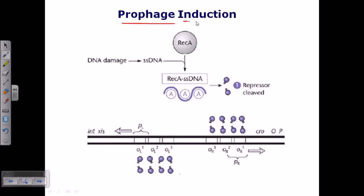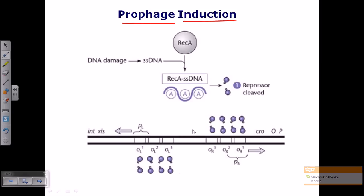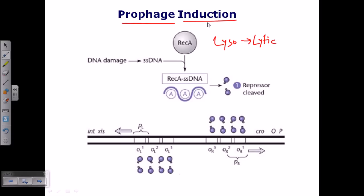Now let's talk about prophage induction — the release of the lysogen from the lysogenic condition. The phage genome is incorporated somewhere in the bacterial genome, and when the environment becomes difficult for the bacteria, the phage genome can emerge as a lytic phage and lyse the bacterial cell. This is called prophage induction, and it requires some kind of stress — such as DNA damage from UV radiation or chemical stress.